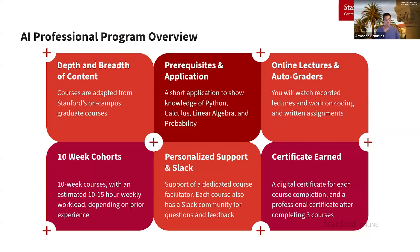Professional courses are different from graduate courses as they are two separate programs operating under the same umbrella. However, you can still take one graduate course and count it towards a professional certificate. Otherwise, we require three courses to be completed to earn our professional AI certificate. Our courses are adapted from the original on-campus grad courses, maintaining the same level of rigor while being adapted for a professional audience.